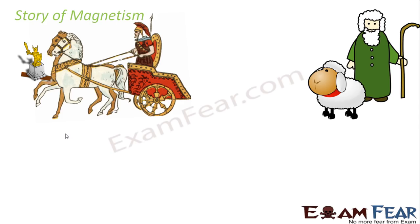It happened a long time back, somewhere around Turkey, where shepherds found that there were some rocks which attracted nails. They discovered it by chance — they observed that there were some special kinds of rocks which had the capacity to attract nails. During that time, nothing called magnetism actually existed, so people thought those rocks were magical. They called those rocks 'magnesium' because they thought they were magical rocks.